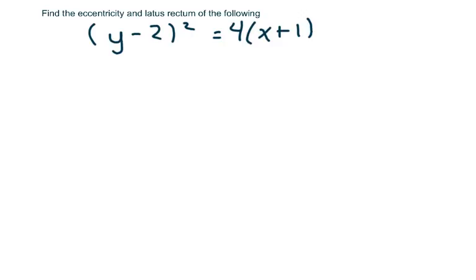Hi, everyone. We're going to find the eccentricity and the latus rectum for four problems. The first one is a parabola, and so we know in the parabola that it's always 1, so E always equals 1.